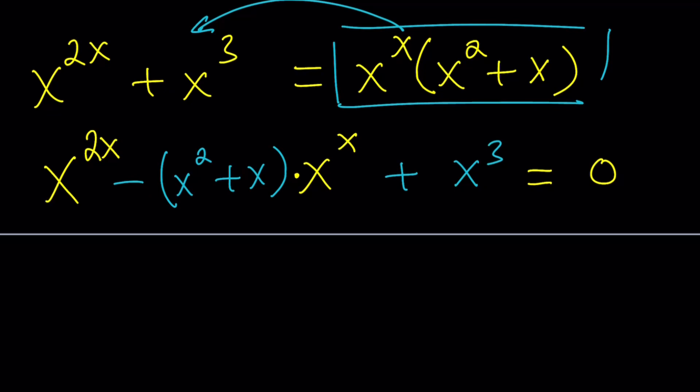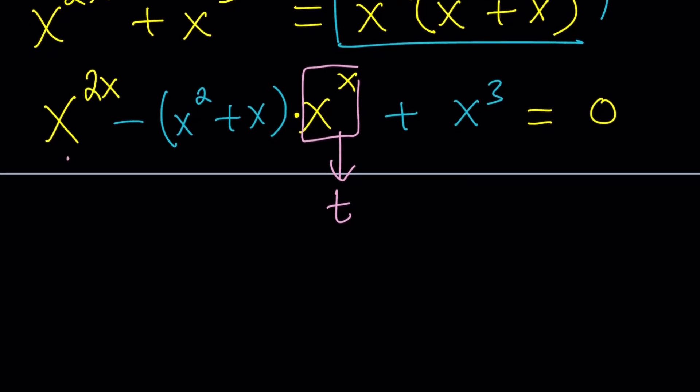So here's what we're going to do. Let's use substitution. Let's replace x to the x with something. How about t? But don't touch the other x's, okay? Just x to the x and x to the 2x, of course. That's what makes this quadratic. So this is going to become t squared. So we get t squared minus x squared plus x times t plus x cubed equals 0. Do you see what I mean by quadratic? This is quadratic in t, which is a little manageable.